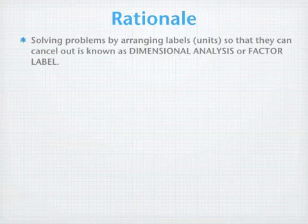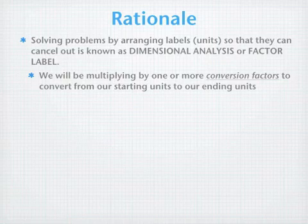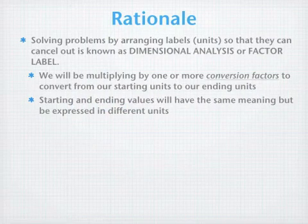Dimensional analysis, sometimes called the factor-label method, is a process of solving problems by rearranging the units or labels so that they can cancel out. We're going to be multiplying by one or more conversion factors to convert from our starting units to our ending units. And the starting and ending values are going to have the same meaning, but they're merely going to be expressed in different units.